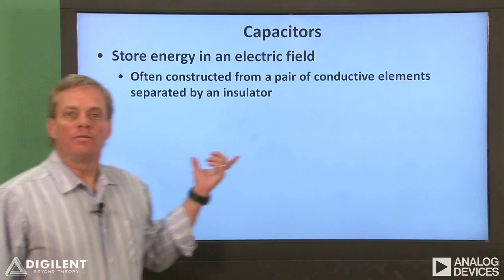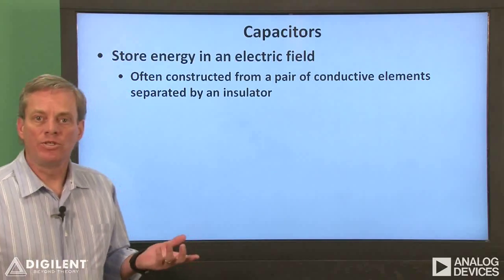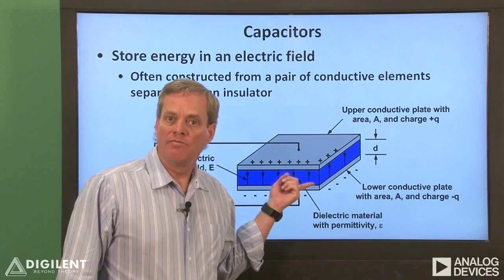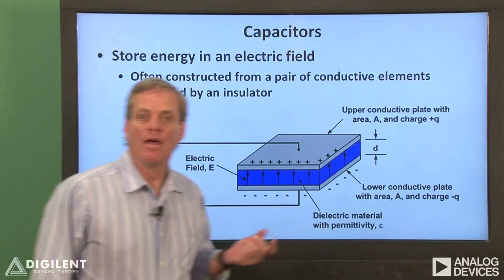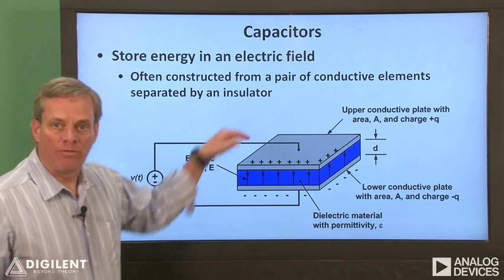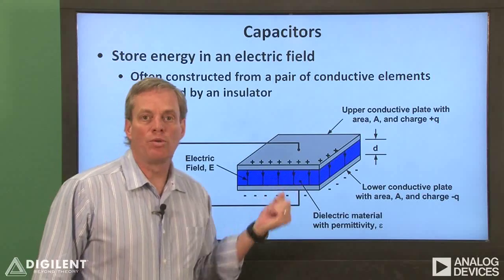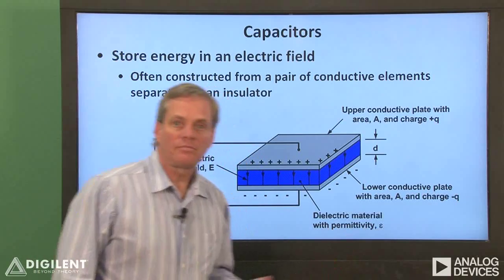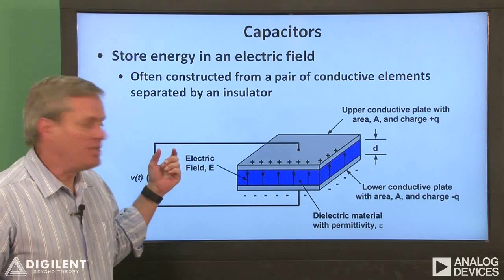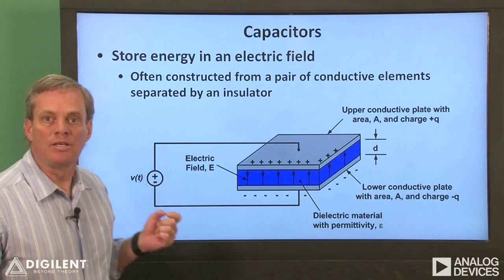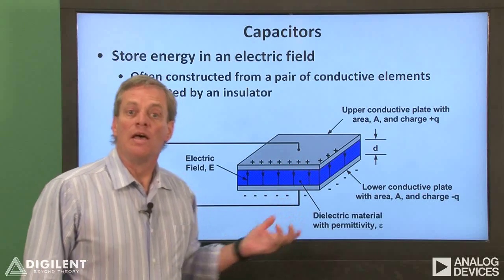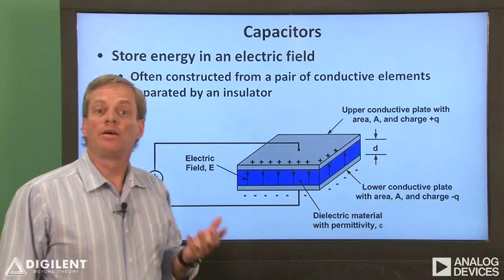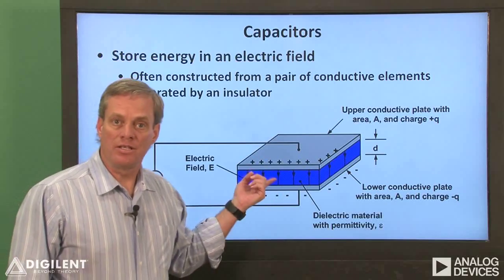First we'll talk about capacitors. Typical capacitor construction consists of two conductive elements separated by a non-conductive material called a dielectric. The dielectric prevents current flow from one element to the other and is characterized by its permittivity, designated by the Greek letter epsilon. If we apply a voltage difference between the two plates, charges will accumulate on the upper and lower plates, creating an electric field between the plates. The capacitor stores energy in this electric field.